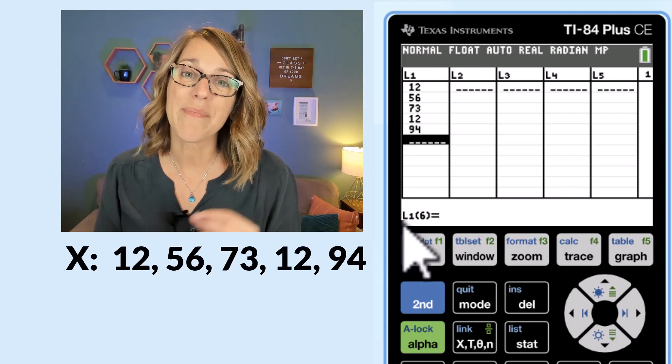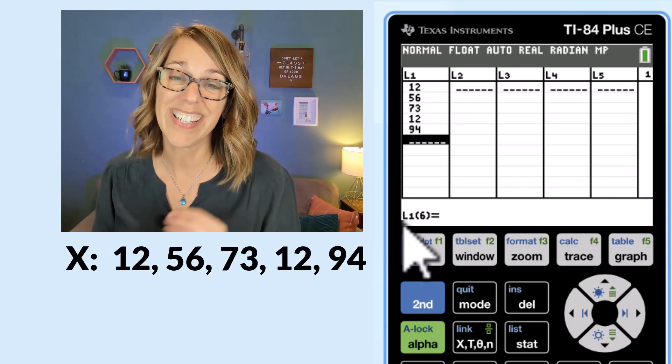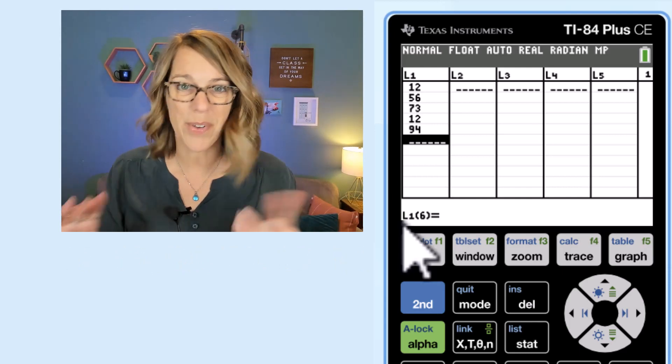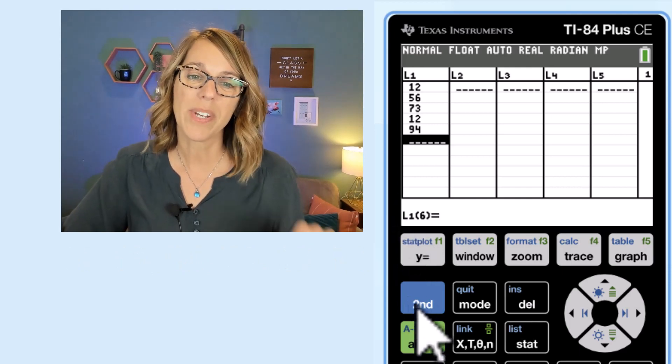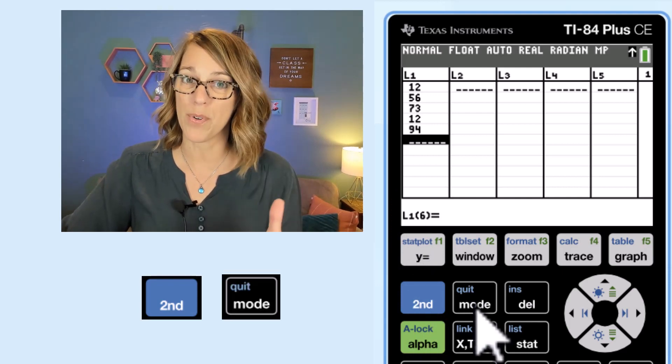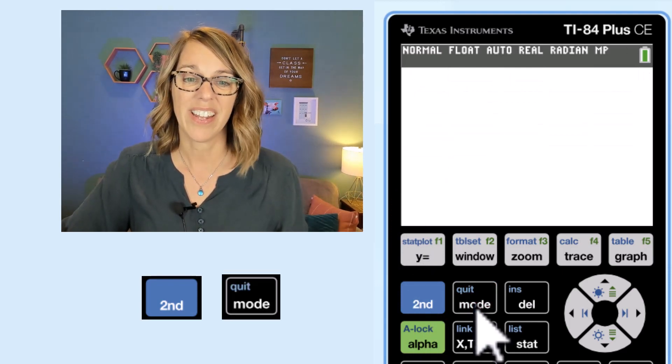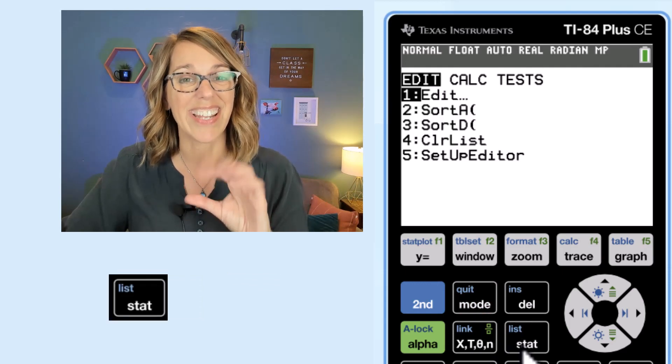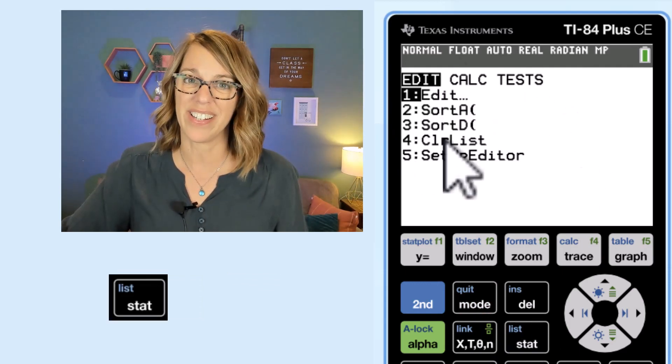So with my data I am ready to compute my statistical measures: mean, median, mode, and more. So I want to quit here. I'm going to click on second followed by mode for that quit button and then I'm going to go back into stats, so stats, and this time I'm going to calculate.